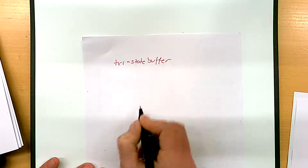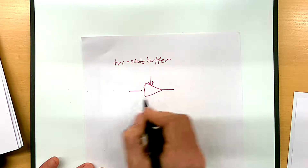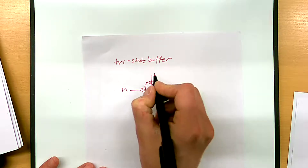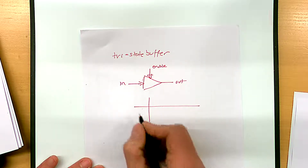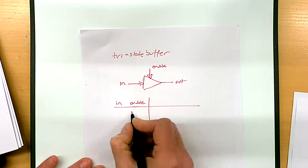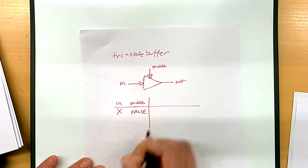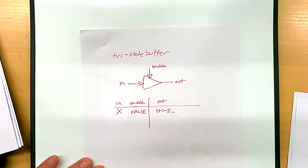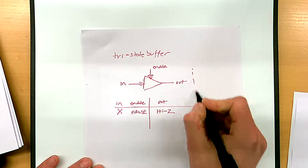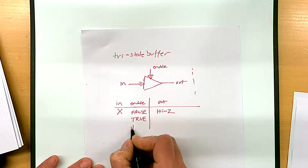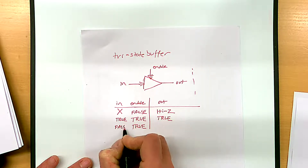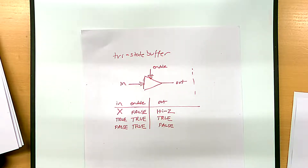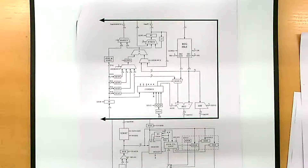A tri-state buffer: for a single bit, it has an input, an output, and an enable. Truth table: if enable is false, output is high-Z regardless of input — disconnected from whatever it connects to. If enable is true, output equals input: input true gives output true; input false gives output false. That's how you gate the bus.